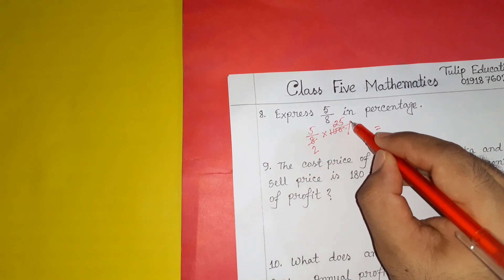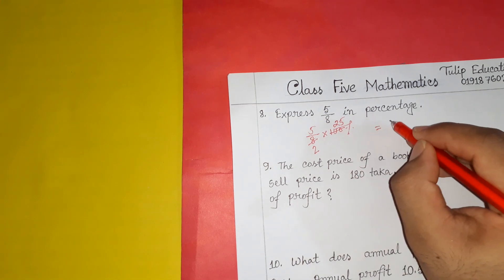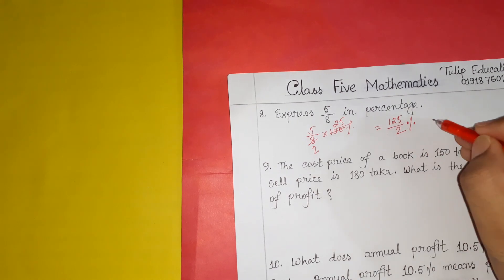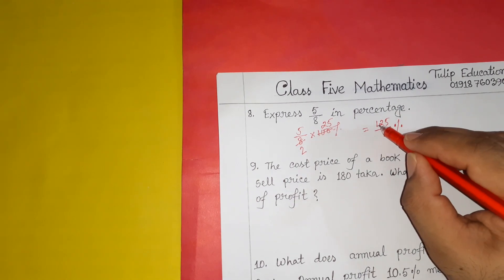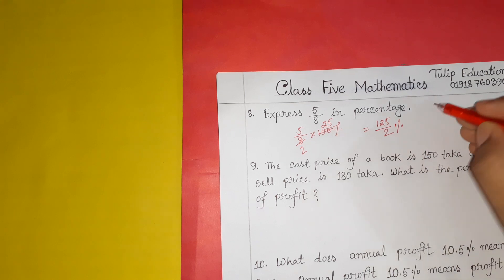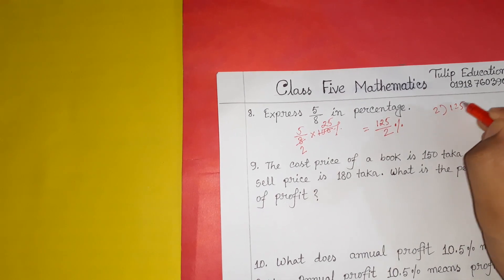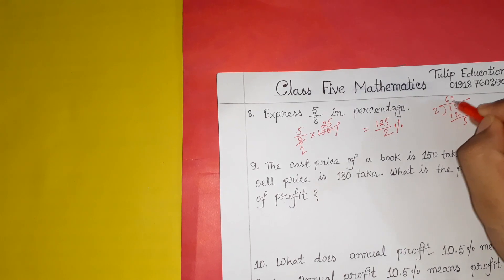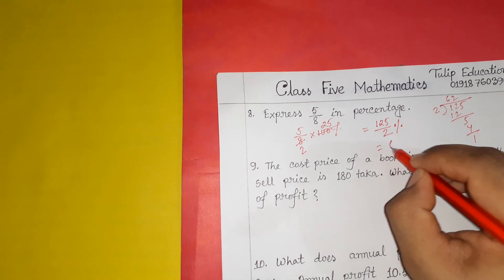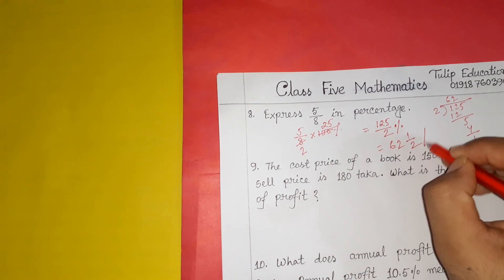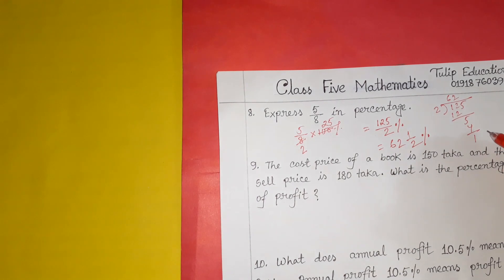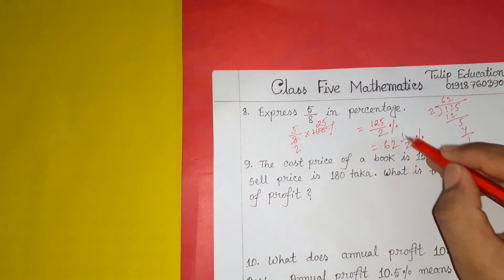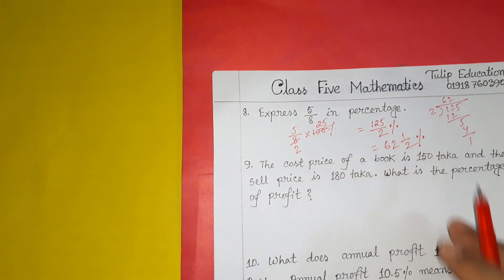We get 5 into 12, then 6 into 12, giving us 5, then 2 into 4 under 1, so we get 62 whole 1 by 2 percent. We convert the decimal and write it as a fraction. So the answer is 62 and a half percent.